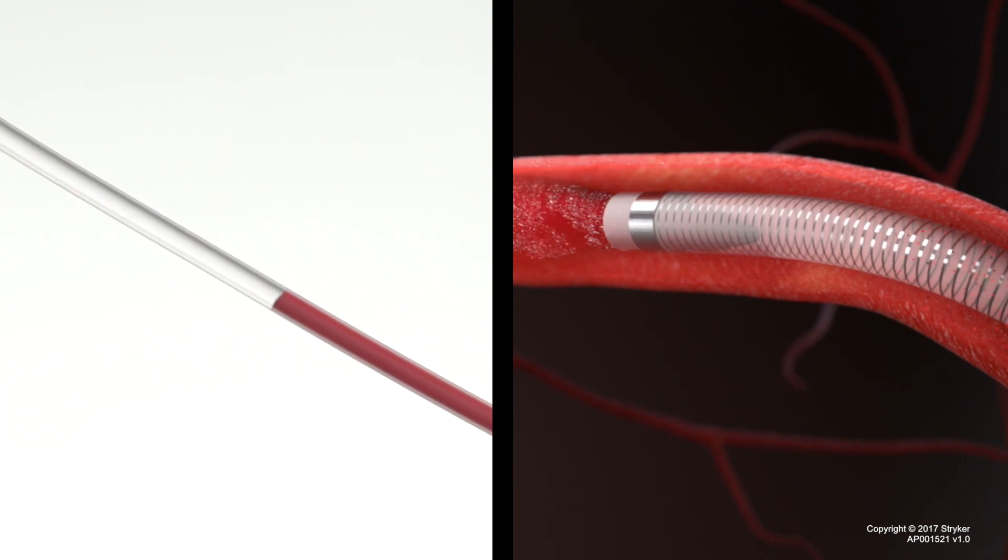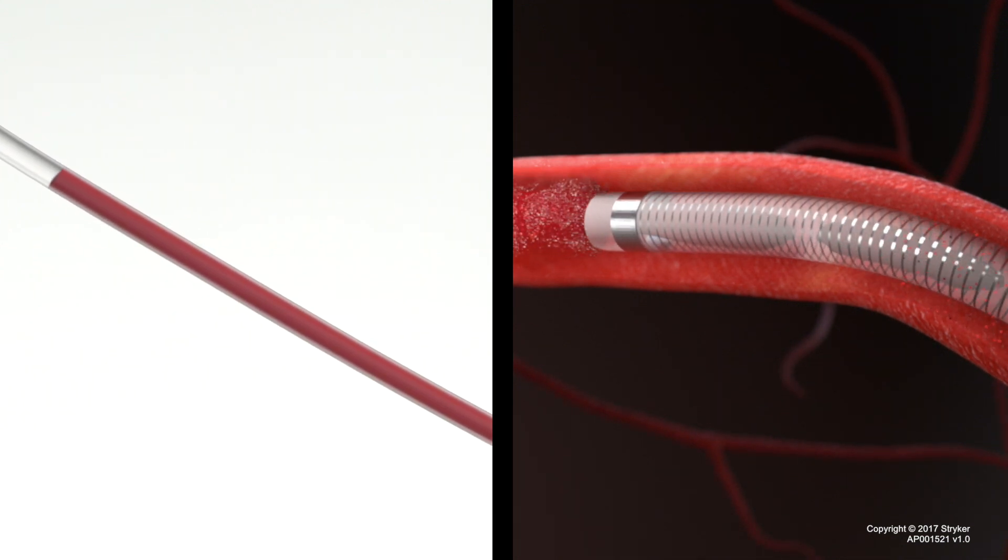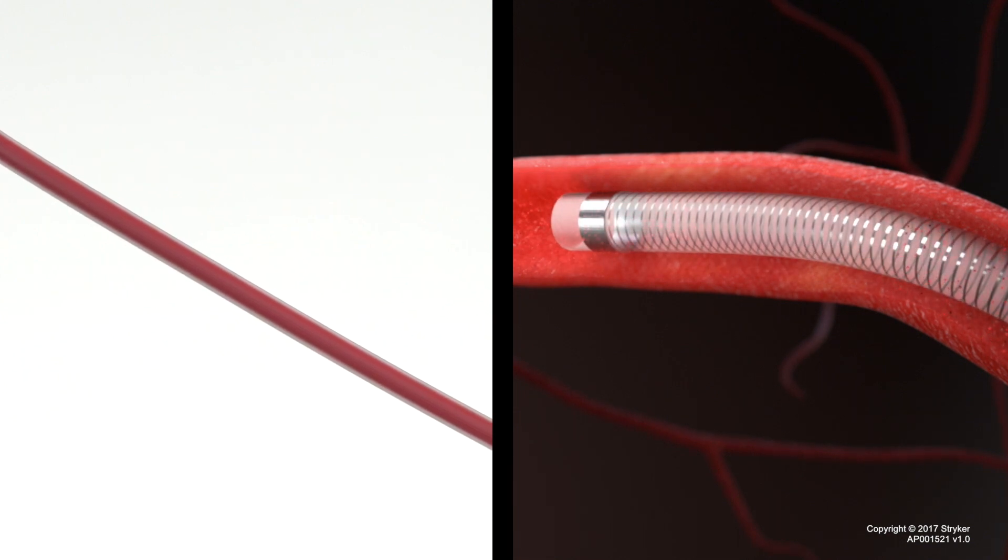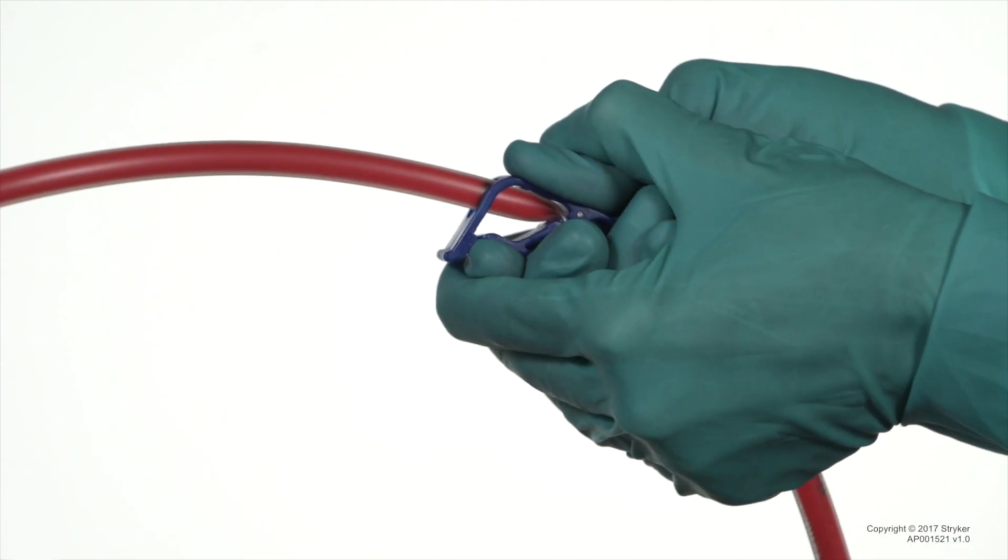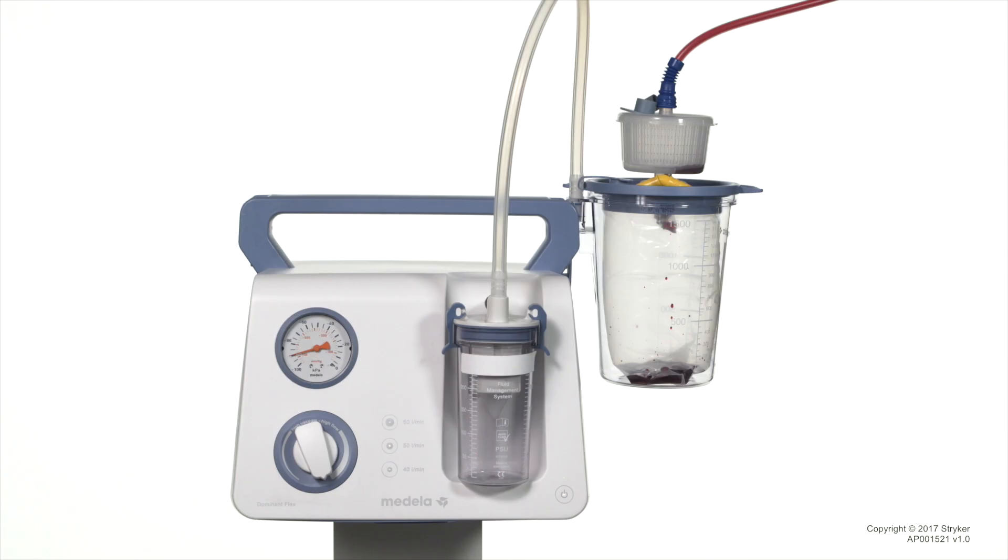If blood stops flowing through the tubing, it may be a sign that the clot is occluding the aspiration catheter. Wait and watch the blood flow in the tubing for signs of clot ingestion. The blue clamp can be used to stop flow at any point during the procedure. The pump can remain on when the tubing clamp is closed.